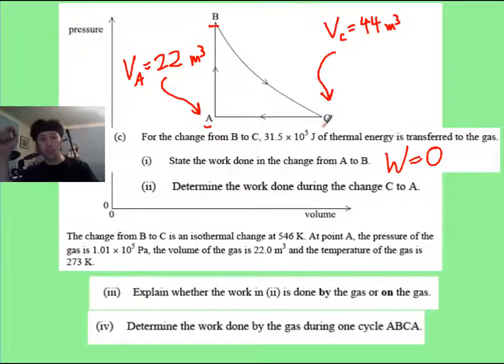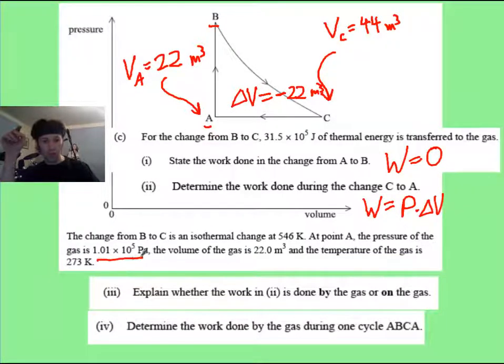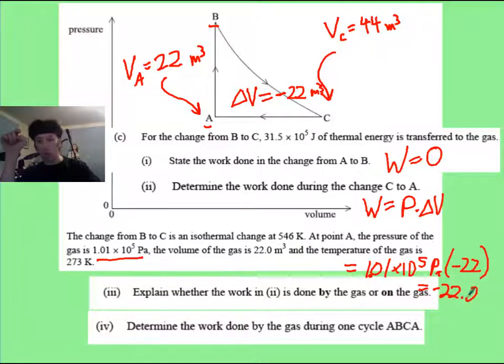Now it says, part two, work done from C to A. Hopefully, you realize that this was not trivial, and you have to know that it is pressure times delta V. Well, your delta V change in volume is 44 to 22, so it's going to be at minus 22 cubic meters. It's going to decrease by that much. And the pressure is at the constant of 101 kilopascals or 101,000 pascals. So that is going to be 1.01 times 10 to the 5th pascals times our negative 22, and that is going to give us a negative 22.2 times 10 to the 5th joules. That is our work done, which is negative. Keep that in mind.